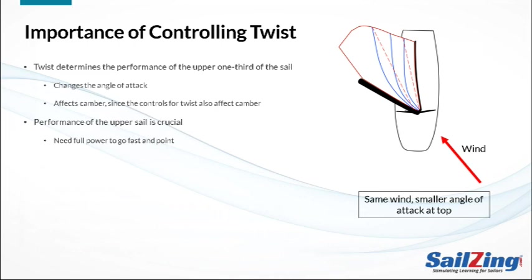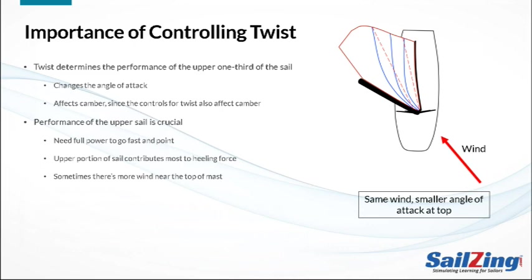Managing the performance of the upper third of your sail is crucial. If it's not trimmed correctly, you're losing a lot of power and pointing ability. Many average sailors don't trim hard enough to power up the upper part of the sail. When it's time to depower, you should start by depowering the upper sail, since it contributes most to the heeling force. Finally, there are times — especially in very light air — when the wind speed and direction is markedly different at the top of the sail, and twist allows you to trim the sail differently at the top to take advantage of this.